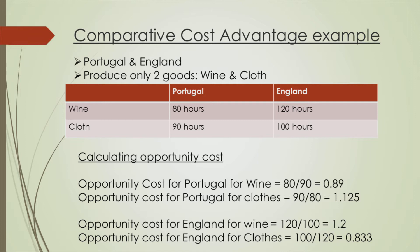Similarly, let's calculate opportunity cost for England for both goods. The opportunity cost of wine for England is 120 divided by 100, which equals 1.2. And the opportunity cost of cloth for England is 100 divided by 120, which equals 0.833. So in this example, Portugal has a lower opportunity cost than England when it comes to wine, whereas England has a lower opportunity cost than Portugal when it comes to cloth.